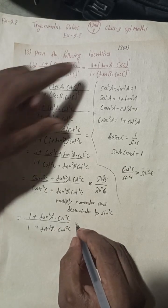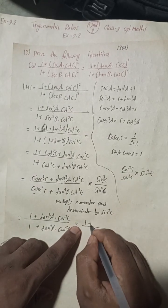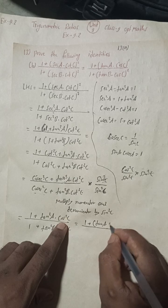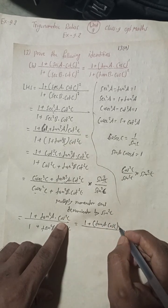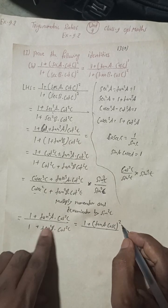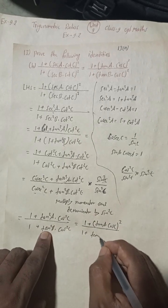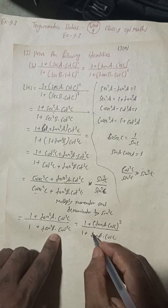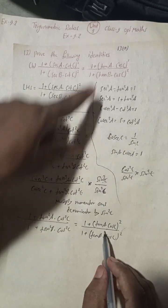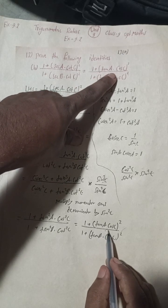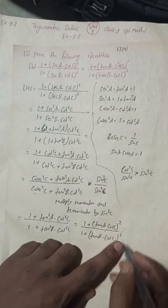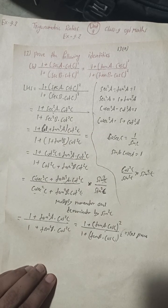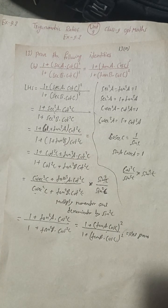So we now have 1 + (tanA · cosC)² whole square divided by 1 + (tanB · cosC)² whole square, since both terms are squared. This is exactly our RHS: (1 + tanA · cosC)² / (1 + tanB · cosC)². Hence proved. This is the complete solution for 13B. 13A is already uploaded — check the playlist.